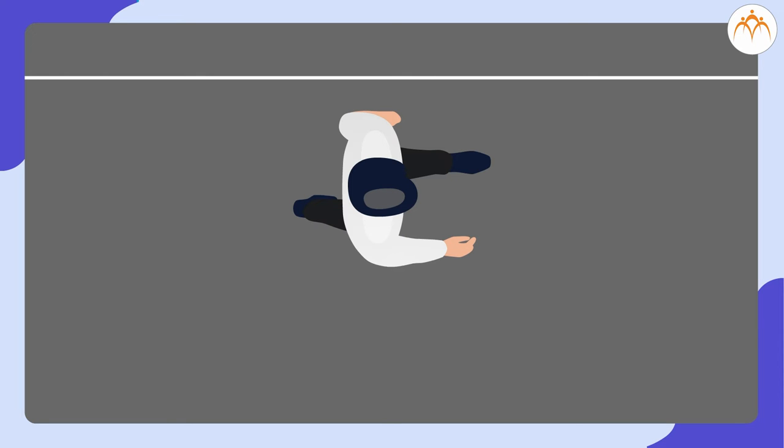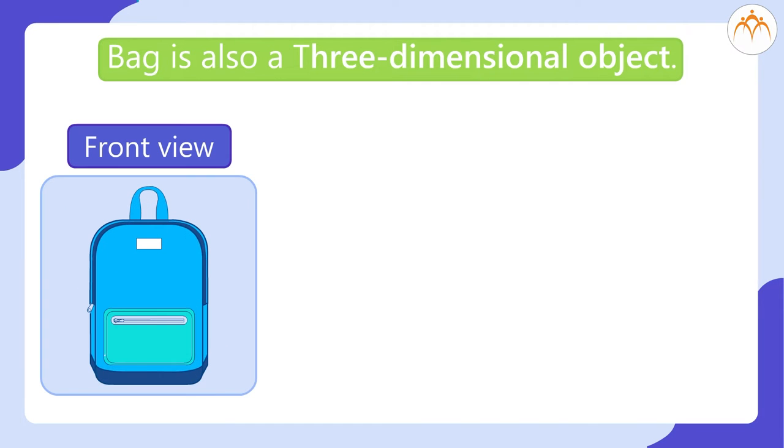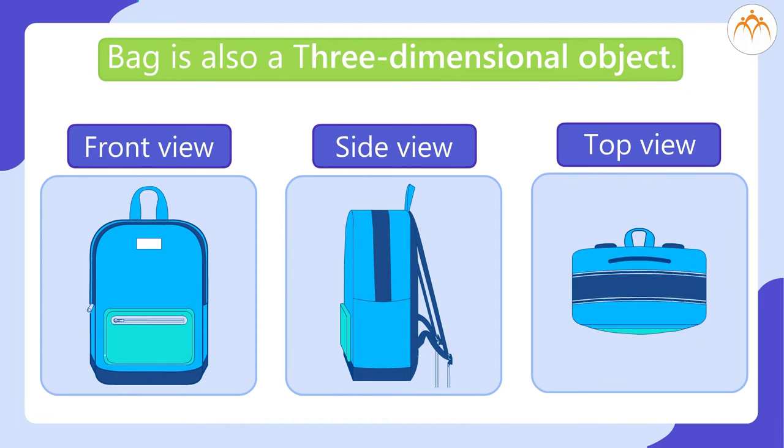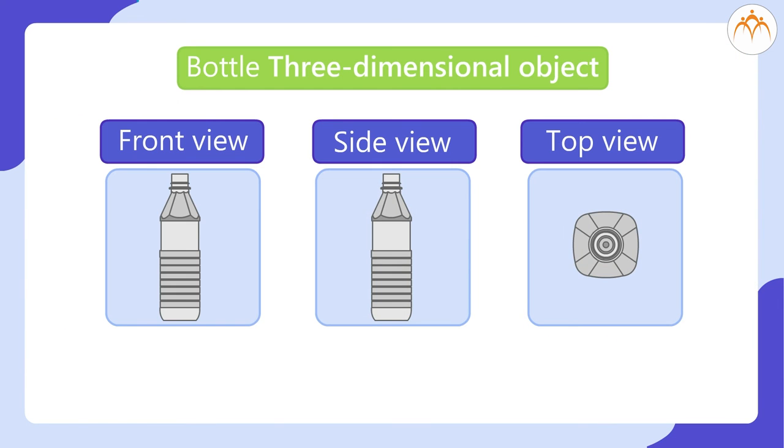Let us see simple examples. A bag is also a three-dimensional object. This is the front view of the bag. This is the side view of the bag and this is the top view of the bag. Glass, bottle, TV are also three-dimensional objects.